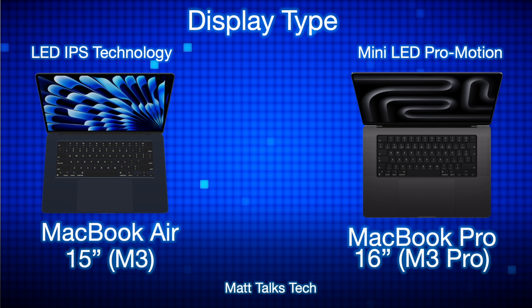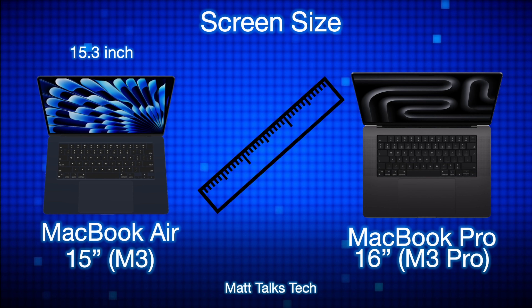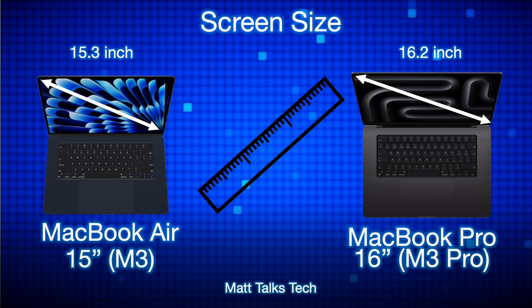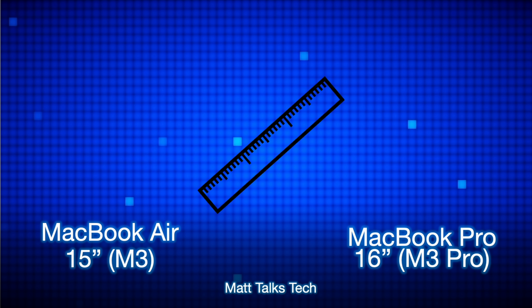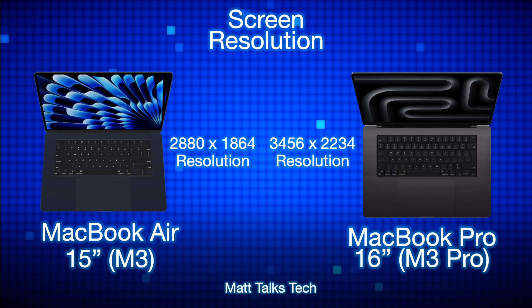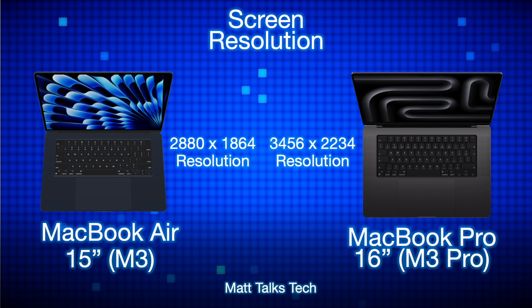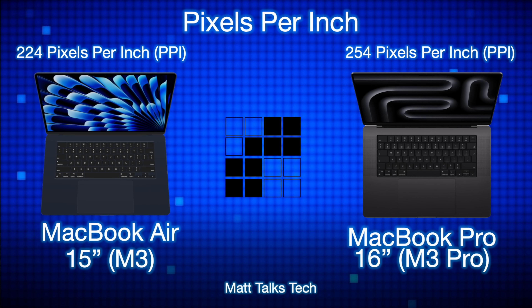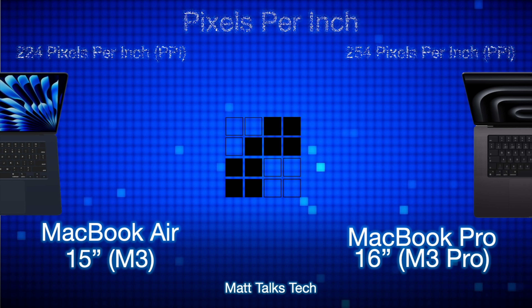For screen sizes, there's just under an inch difference: the MacBook Air M3 has a 15.3-inch display, while the MacBook Pro is 16.2 inches. In terms of resolution, the MacBook Air gives you 2880×1864, while the MacBook Pro offers 3456×2234. That translates to 224 pixels per inch on the Air versus 254 ppi on the Pro.